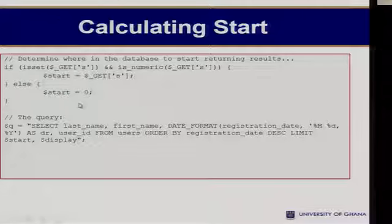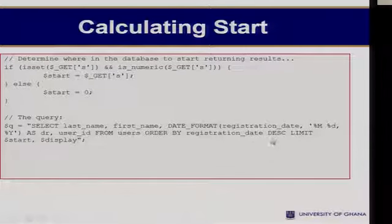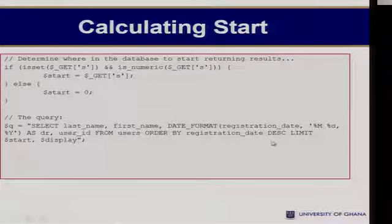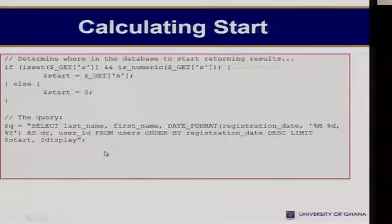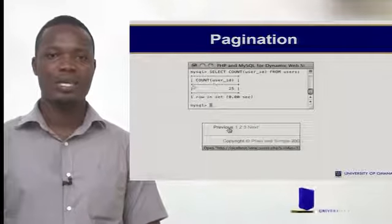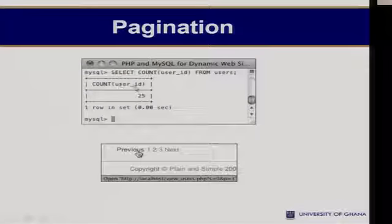Then we continue to query: selecting the last name, the first name, formatting the registration date, and starting from 'start' and ending at 'display'. Display holds a value of 10, so if stat is zero, we are starting from zero and ending at 10, fetching us 10 records. This would be the result returned if we execute SELECT COUNT(user_id) FROM users — in this case our users table has 10 rows.